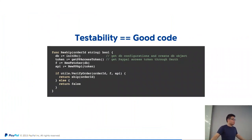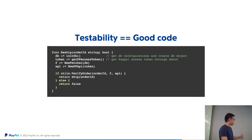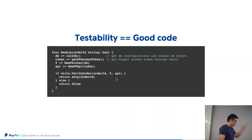The whole point of this talk is: testability equals good code. If you hate testing, you should really rethink how you write your code, because it really just means your code is bad. Another example to prove the point: let's say we have a function called Reship that makes use of the verify order function we just created. In this function we create a DB and PayPal API using OAuth. It works — but again, if you don't think about how you can test it later, you won't make it maintainable in the long run.